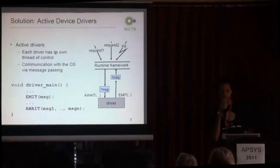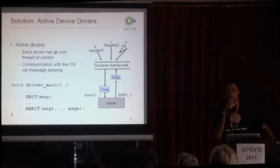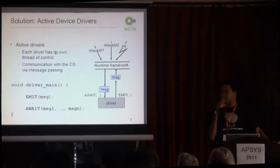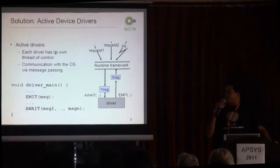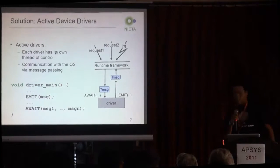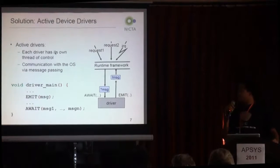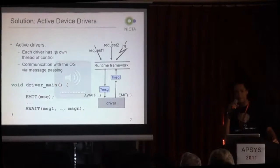Here is our solution to this problem. We propose a new driver architecture where each driver has its own thread of execution and communicates with the operating system using message passing. The driver only has one entry point, and it receives messages from the operating system using an await call. Await is a blocking operation which returns one of the messages that it takes as argument. The runtime framework serializes all the operating system requests so that the driver doesn't have to deal with concurrency anymore.